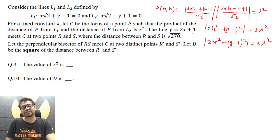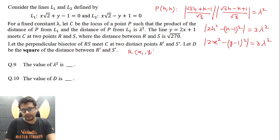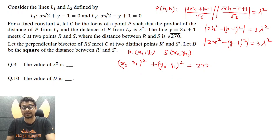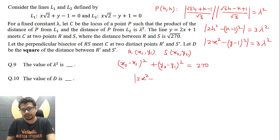It is given that the line y = 2x + 1 meets C at two points R and S, the distance between which is √270. Let R = (x₁, y₁) and S = (x₂, y₂), so (x₂−x₁)² + (y₂−y₁)² = 270. To find the intersection of curve C and the line y = 2x + 1, I substitute: 2x² − (2x + 1 − 1)² = 2x² − 4x² = −4x².